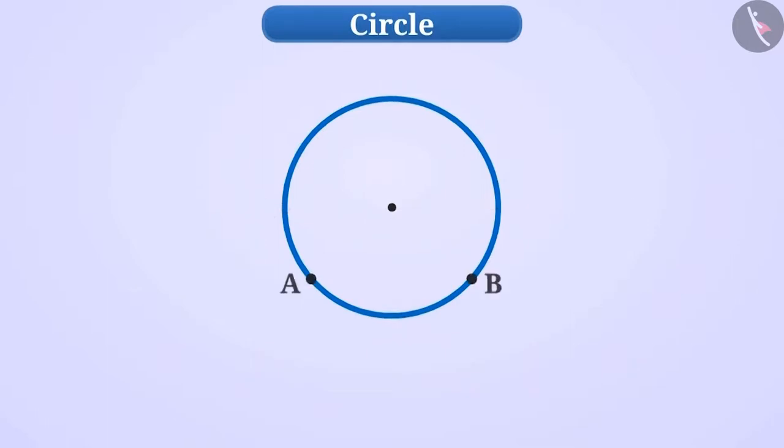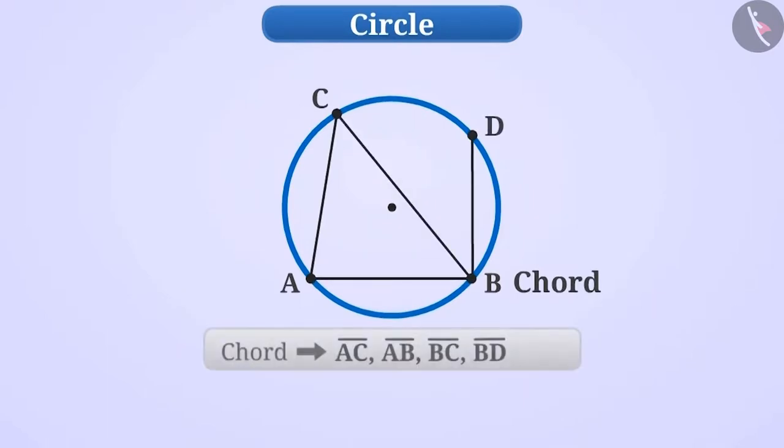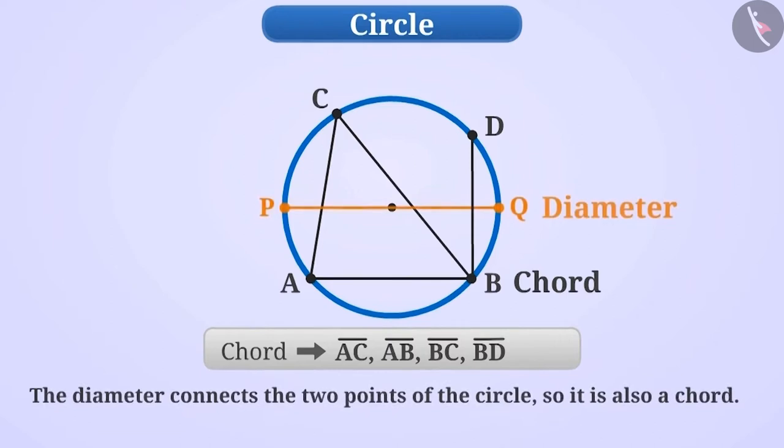If we connect any two points of the circle, then the line segment formed from them is called a chord of the circle. Like here, all the line segments AC, AB, BC, BD are chords. Since the diameter of a circle connects two points, it is also a chord.